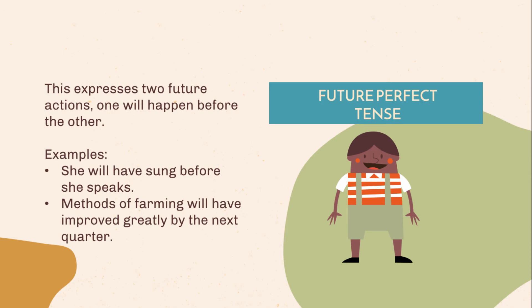Future perfect tense. This expresses two future actions — one will happen before the other. Examples: She will have sung before she speaks. Methods of farming will have improved greatly by the next quarter.